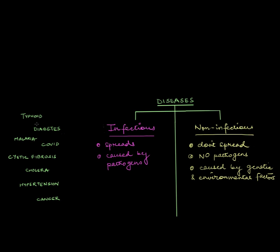First up is typhoid. Typhoid is a bacterial disease that spreads through food and water, so that is an infectious disease. Then we have diabetes. Diabetes is the increase of sugar in the blood — something that a pathogen can't do — so it is a non-infectious disease.